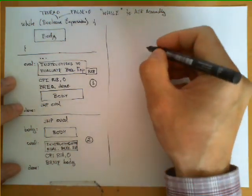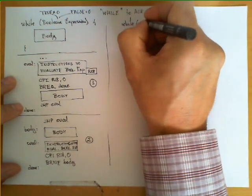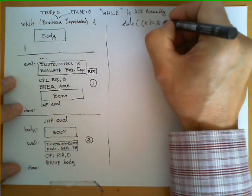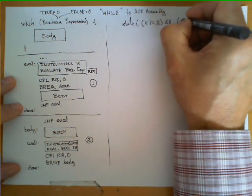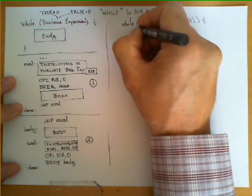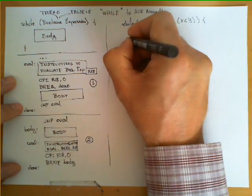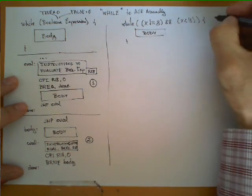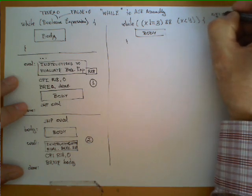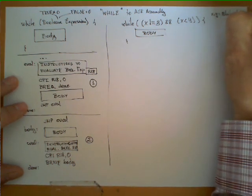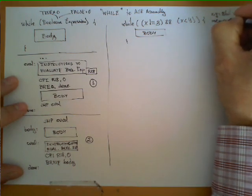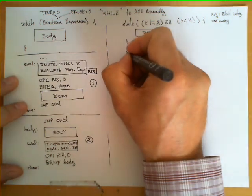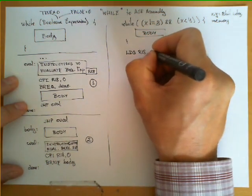Let's now see an example. Suppose we have to translate the following loop with a slightly more complex condition: while x is different from 3 and x less than y, we have some code — the body — and we close the curly brace. We assume that x and y are 8-bit integers stored in memory in locations with labels exactly the same name. The first thing to do is start evaluating the sub-expression, so we do LDS — bring from memory — stored in R18 the value of x.